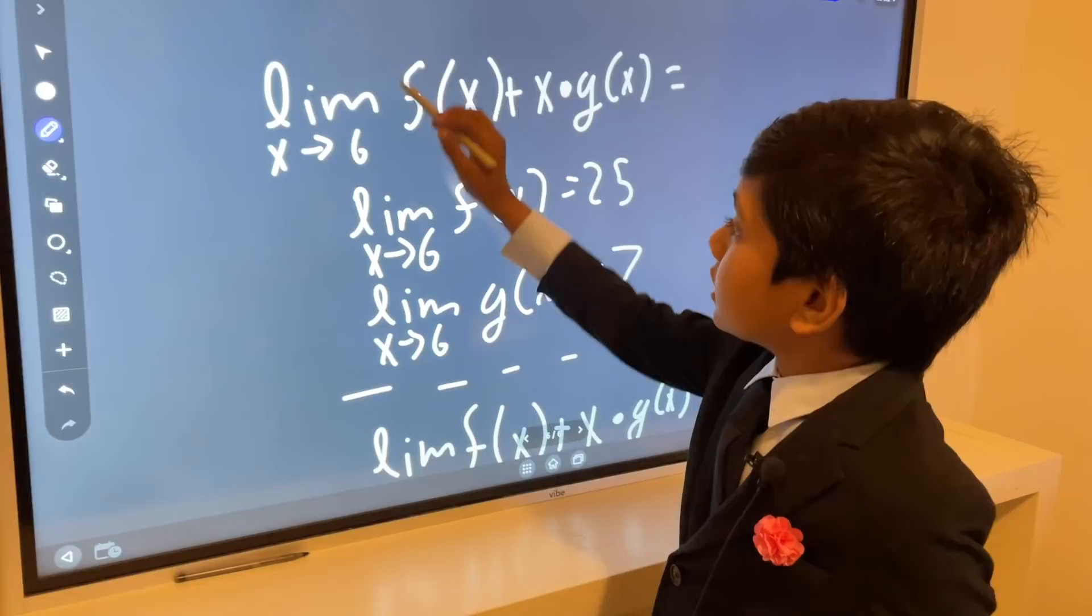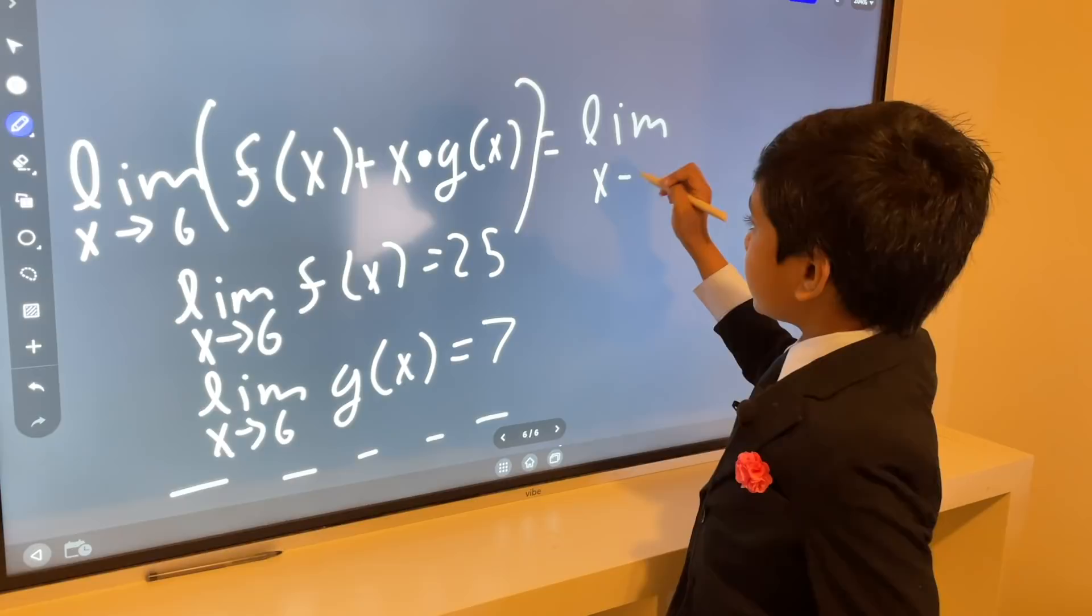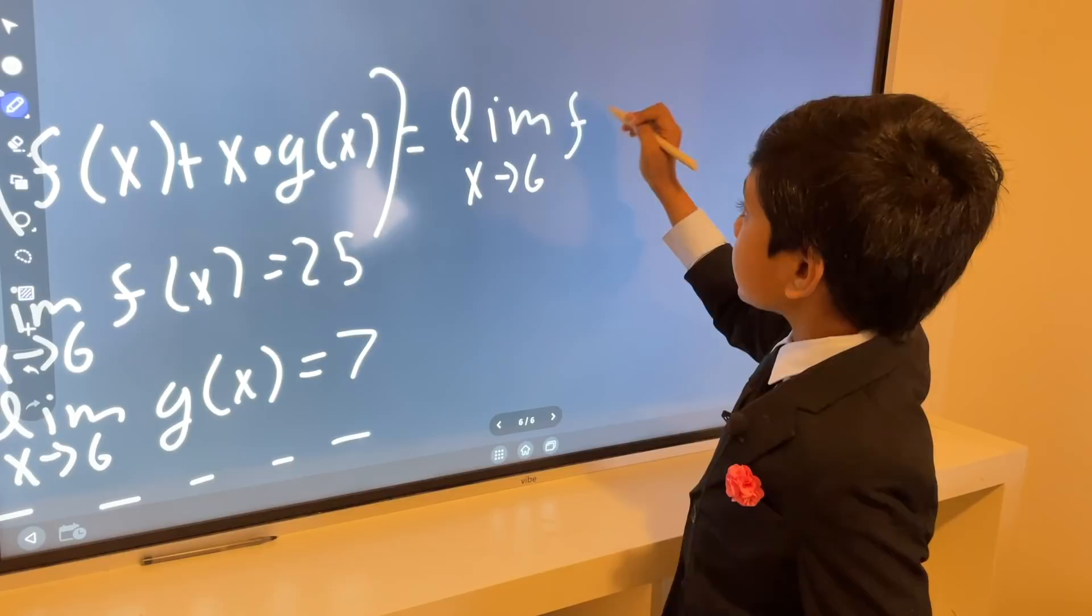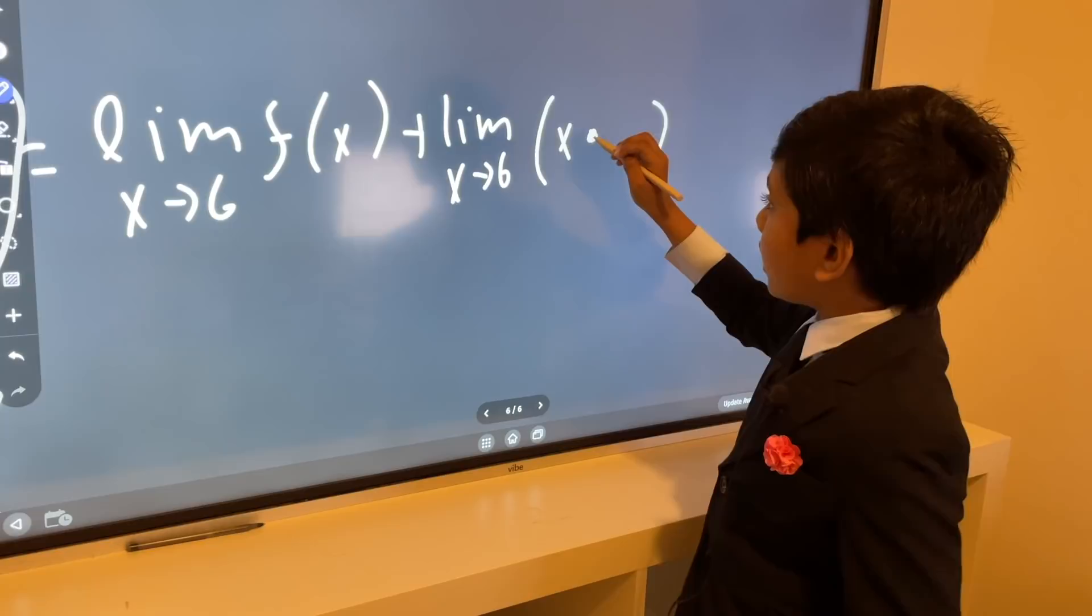Because we know the limit as x approaches 6 of f(x) of this entire thing, if we use the law of addition and multiplication, then we know that this is just the limit as x approaches 6 of f(x) plus the limit as x approaches 6 of whatever demonic entity x and g(x) make up to get the limit. And we can also use the multiplication law.